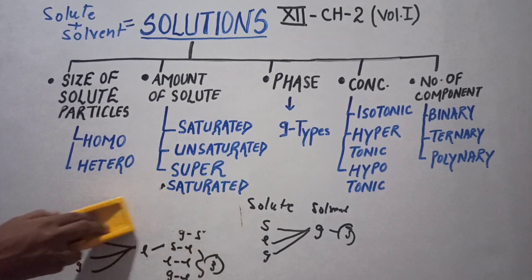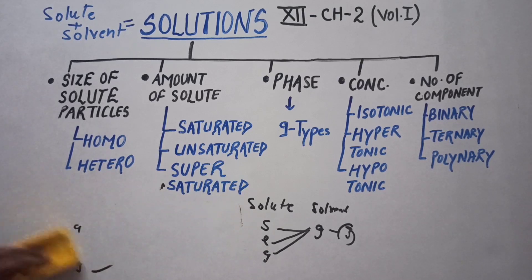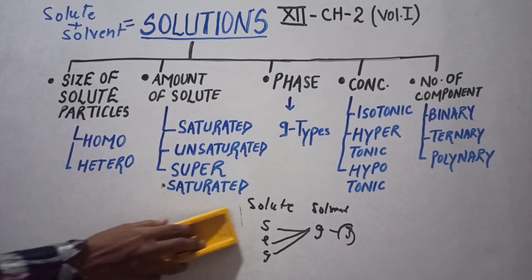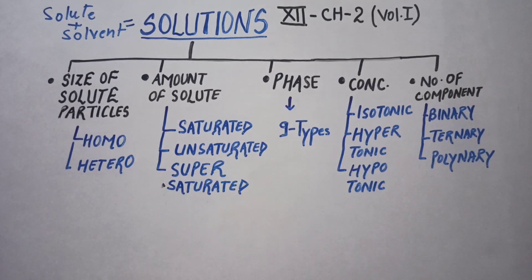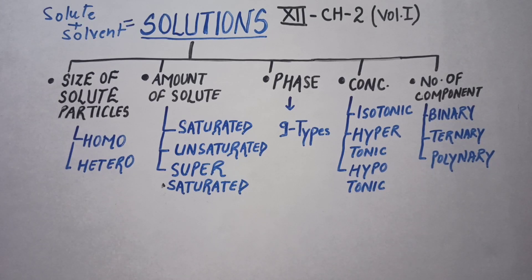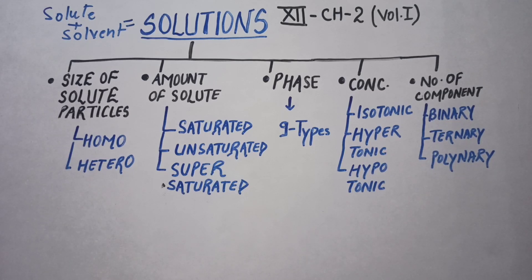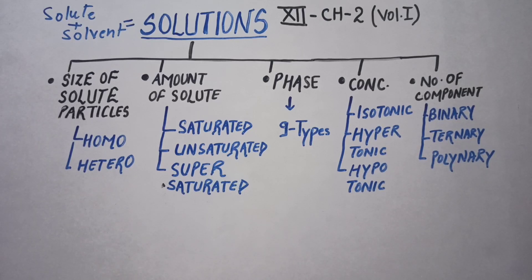The fourth classification is according to concentration — how much solute is present in the solvent. We can classify it into three major categories: isotonic, hypertonic, and hypotonic. Isotonic means when the concentration of the solute is the same as another solution. For example, water inside a raisin where the concentrations are equal — water will neither move in nor out.